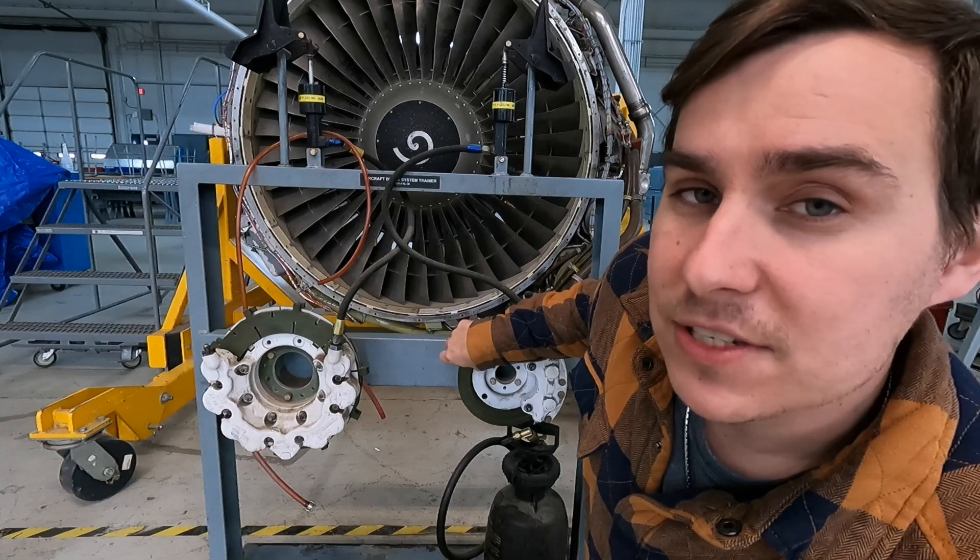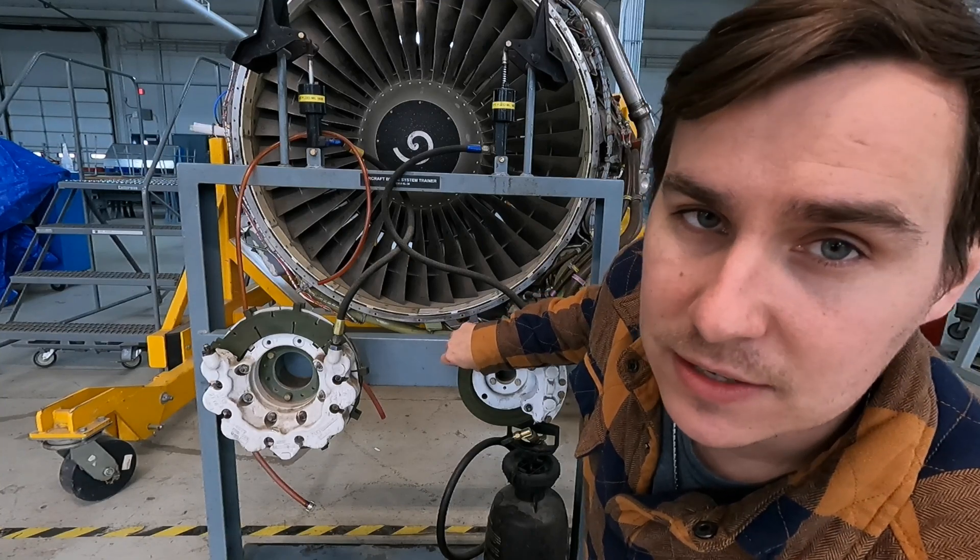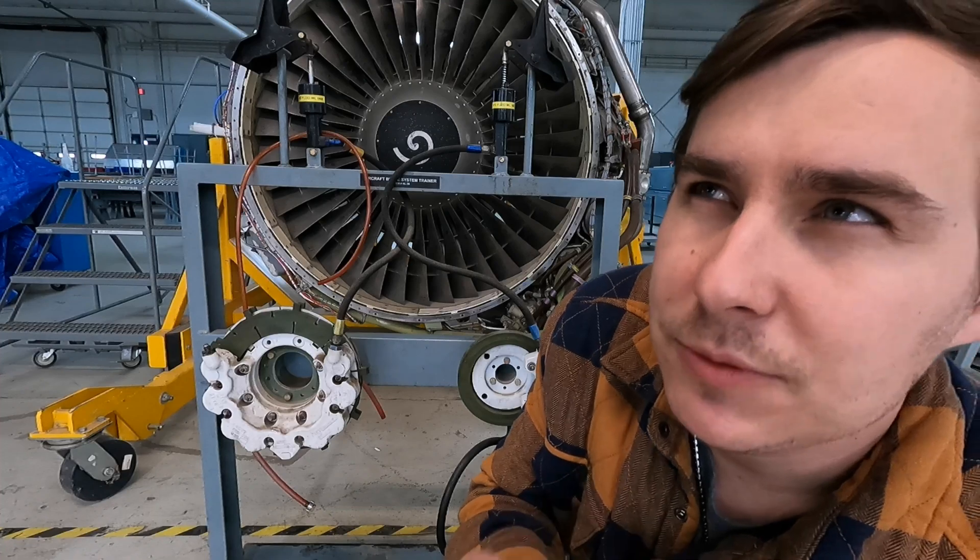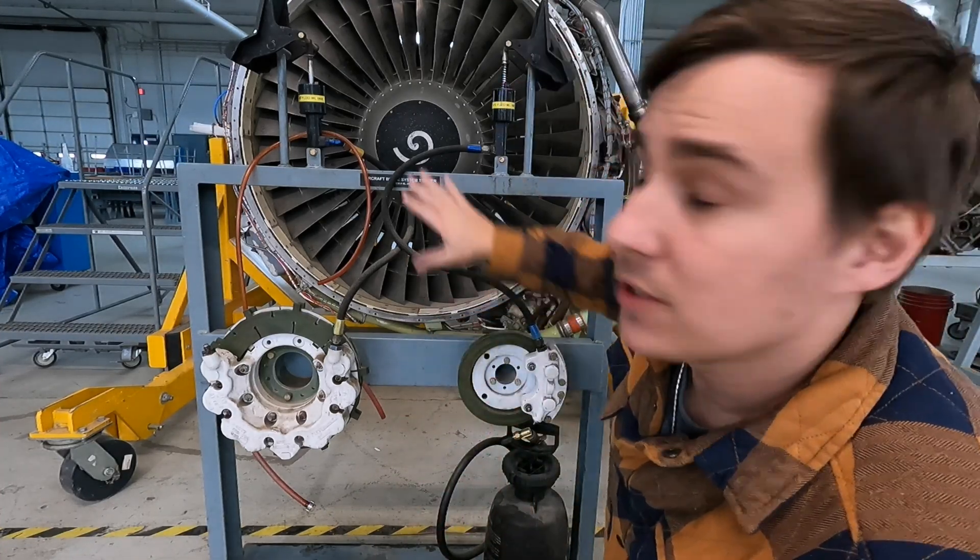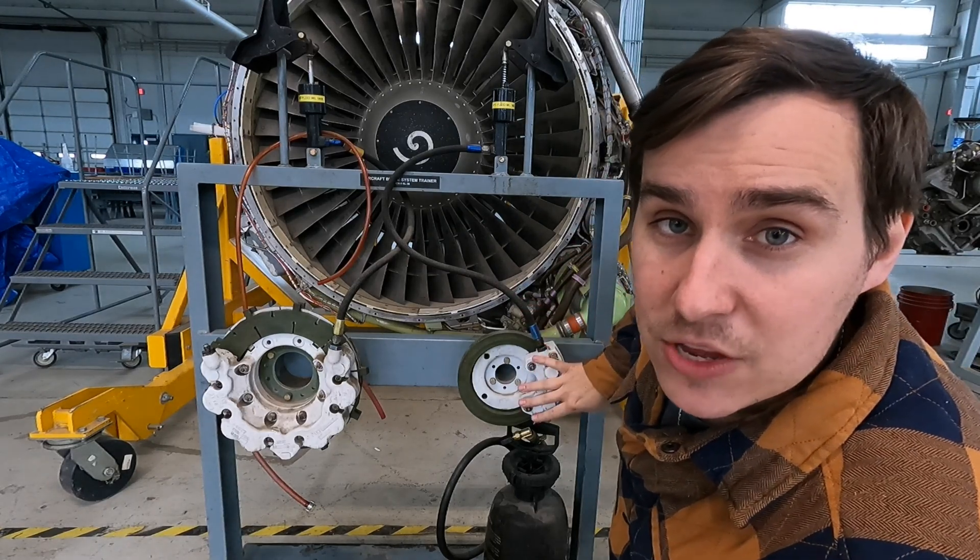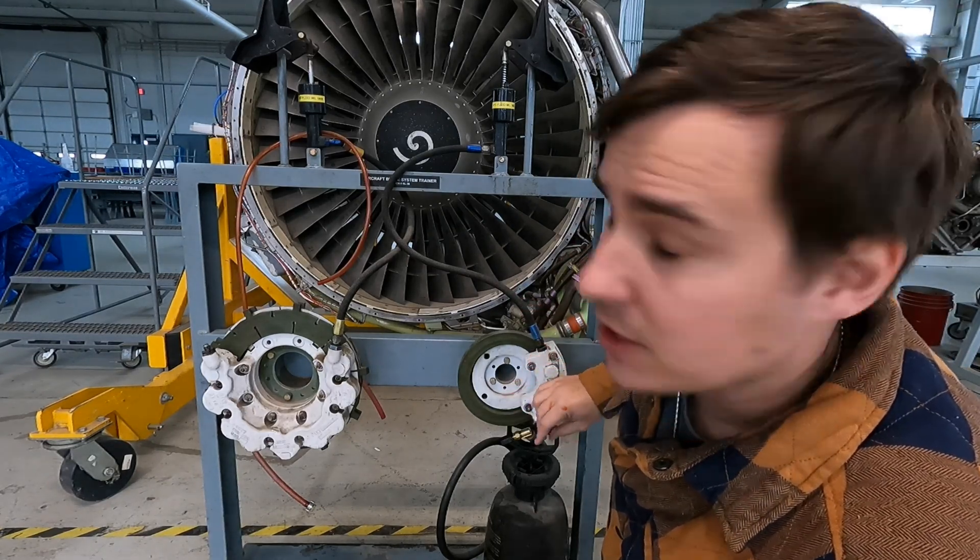This is out of either a Cessna 172 or a Cessna twin of some kind. Now, Cessnas are not unique, but they are different in the sense that it's a sealed system. You have your reservoir at the top, you have your supply line, and then you have your caliper down at the bottom.